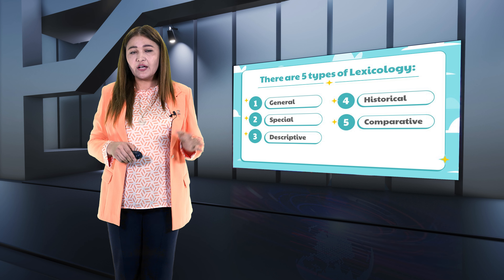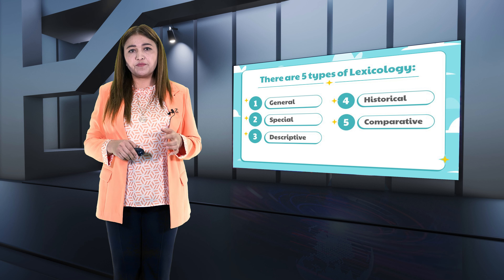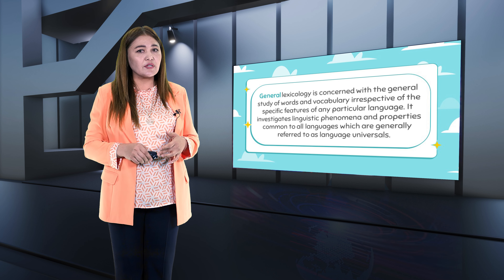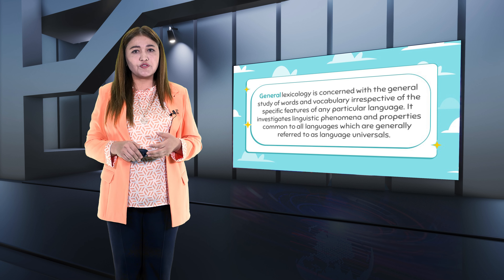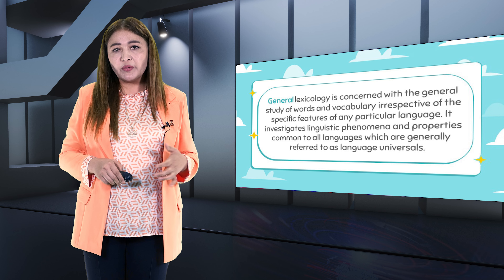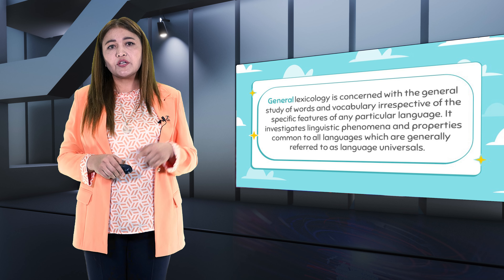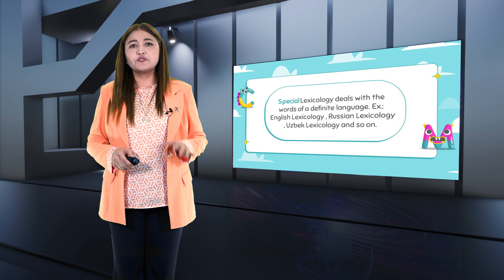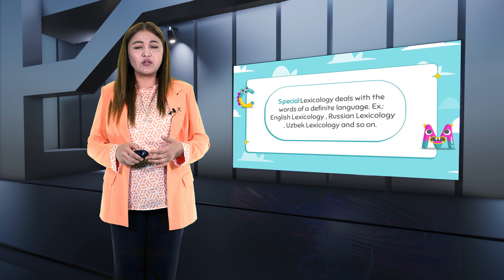There are five types of lexicology: general, special, descriptive, historical, and comparative. General lexicology is concerned with the general study of words and the vocabulary, irrespective of the specific features of any particular language. It investigates linguistic phenomena and properties common to all languages, which are generally referred to as language universals. Special lexicology deals with the words of a defined language — for example, English lexicology, Russian lexicology, Arabic lexicology, and so on.